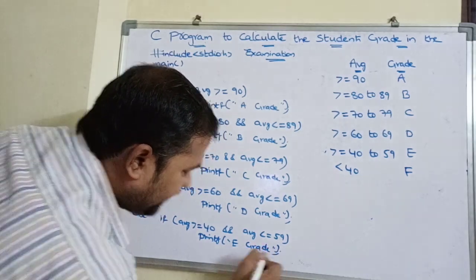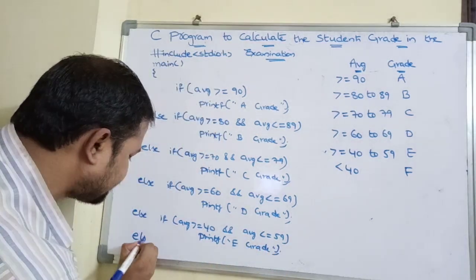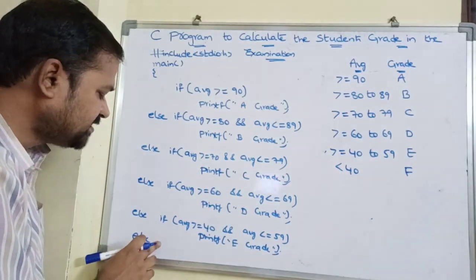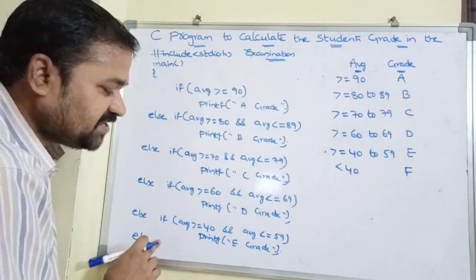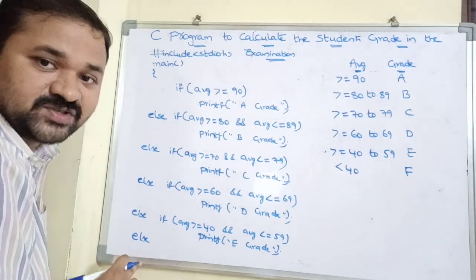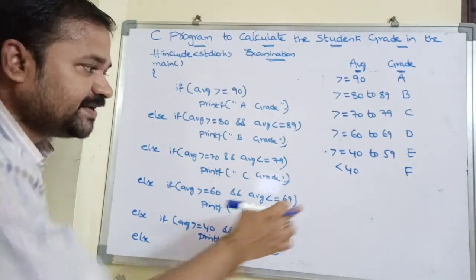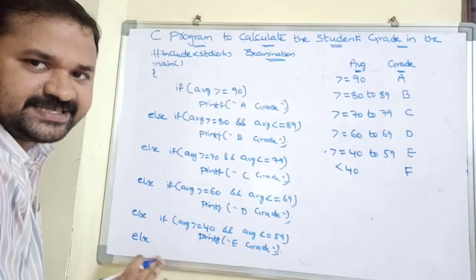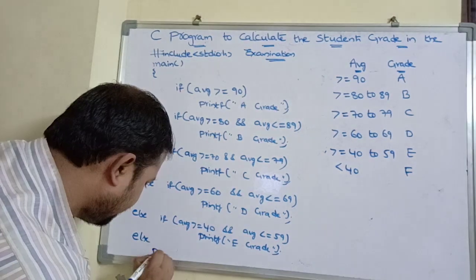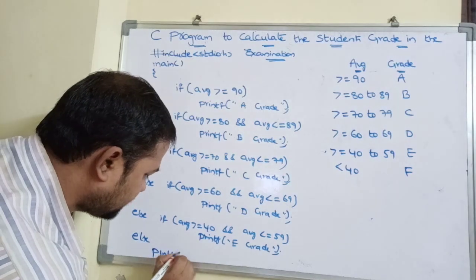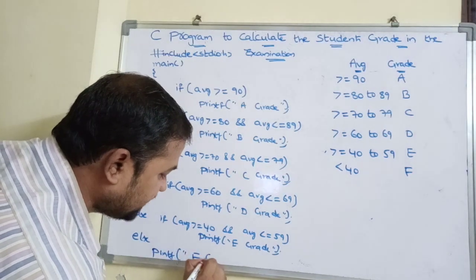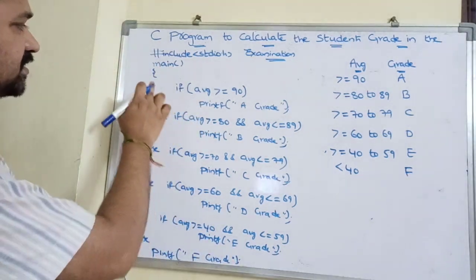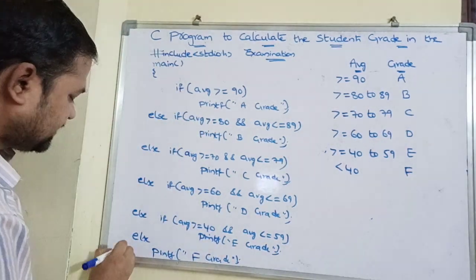For the last else block, there is no need to specify any condition. When this else block executes, the average must be less than 40. So else is sufficient — print grade F, where F stands for fail. We close only one curly brace, for the main function.